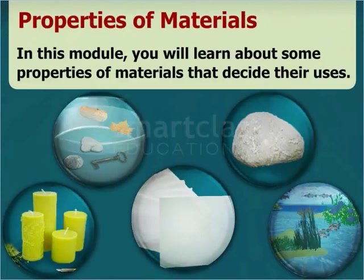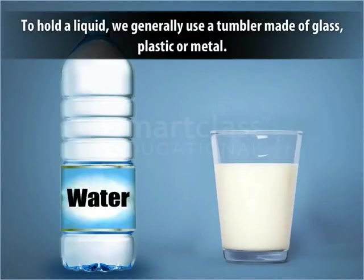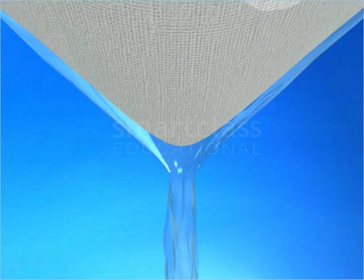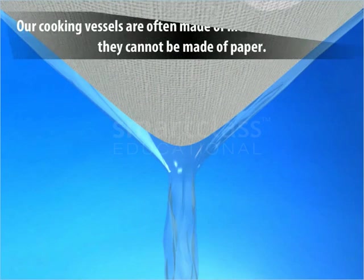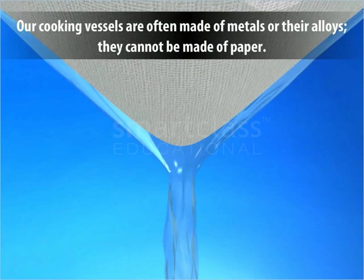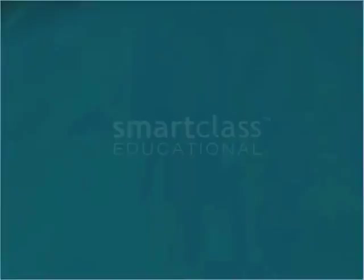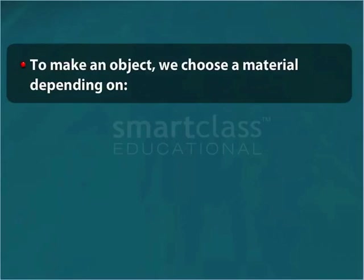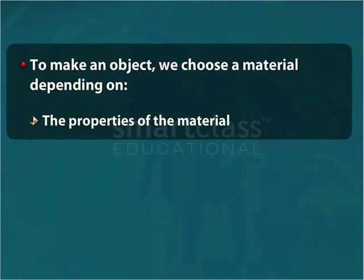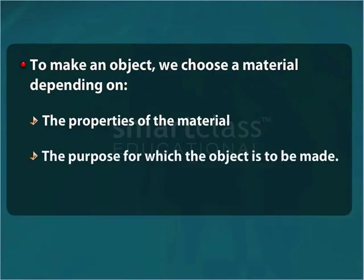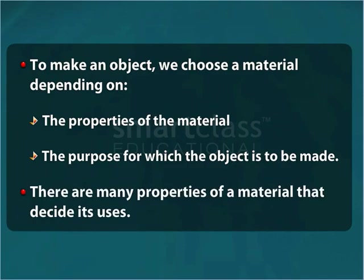Properties of Materials. In this module, you will learn about some properties of materials that decide their uses. To hold a liquid, we generally use a tumbler made of glass, plastic or metal. We do not make a tumbler of cloth as it cannot hold a liquid. Similarly, our cooking vessels are often made of metals or their alloys. They cannot be made of paper. To make an object, we choose a material depending on the properties of the material and the purpose for which the object is to be made. There are many properties of a material that decide its uses.